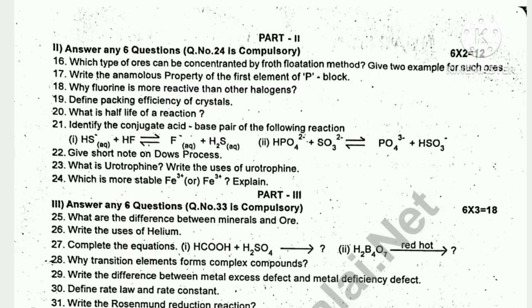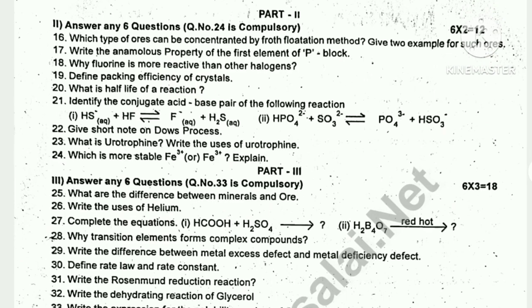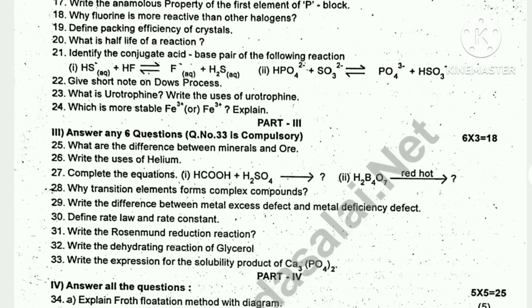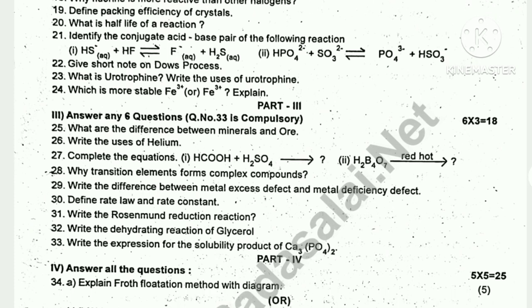Write the anomalous properties of the first element of the p-block. Why is fluorine more reactive than other halogens? What is the half-life of a reaction? What is urotropine? Write the uses of urotropine.